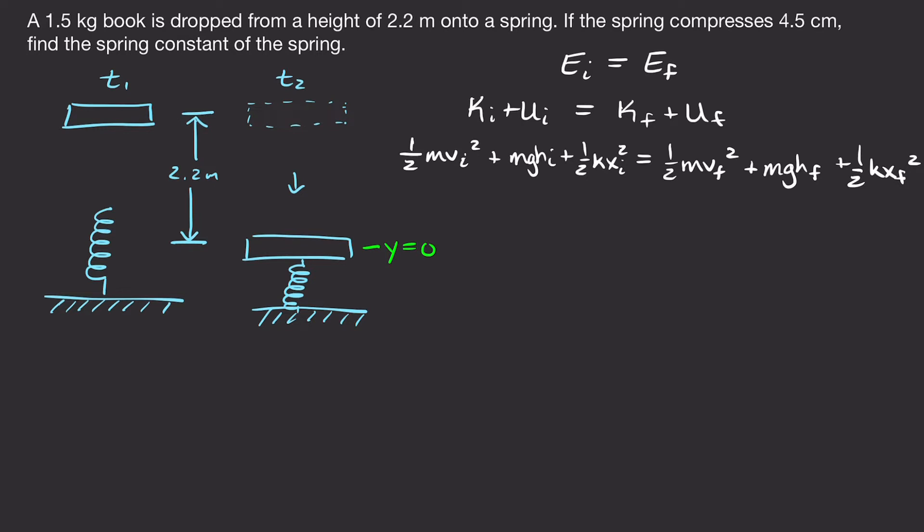First we figure out what's zero. In the beginning, the book is dropped from rest, so our initial velocity is zero, meaning initial kinetic energy is zero. The spring is not displaced initially — it's not compressed or stretched, just resting — and the book isn't touching the spring, so the initial spring potential energy is also zero.